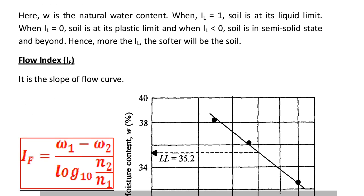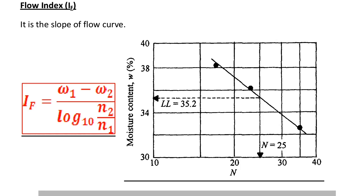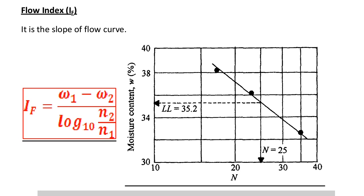Next we are going to see the definition of flow index. Flow index is the slope of the flow curve. Flow index IF = (W1 minus W2) divided by log(N2 divided by N1).